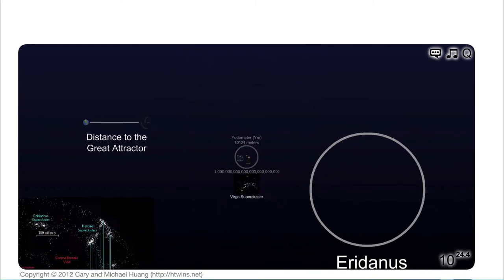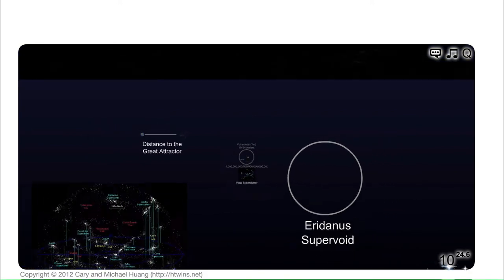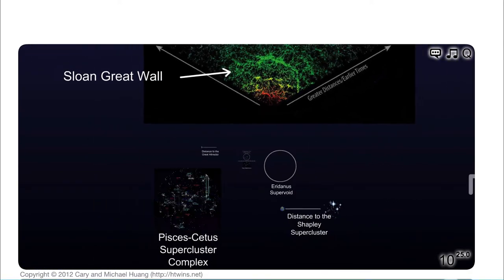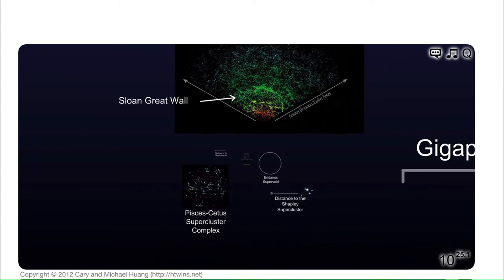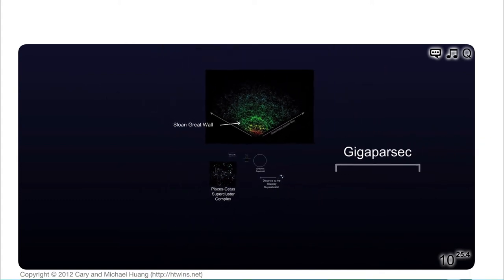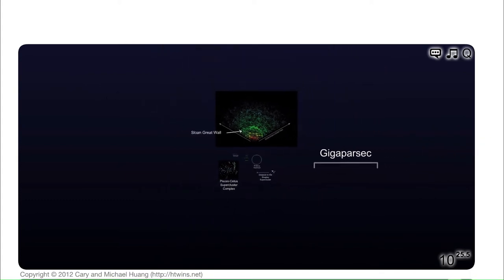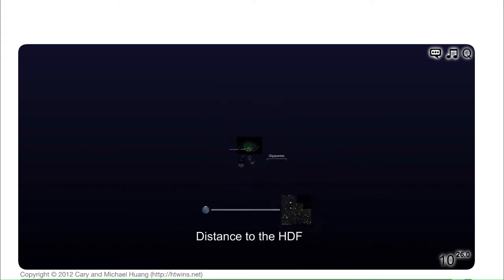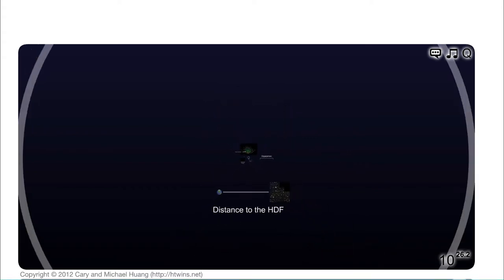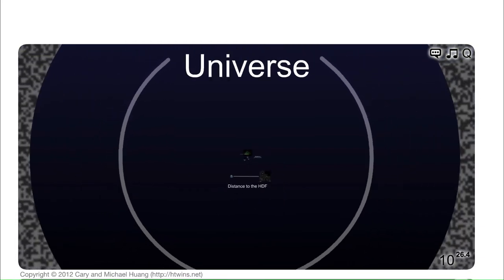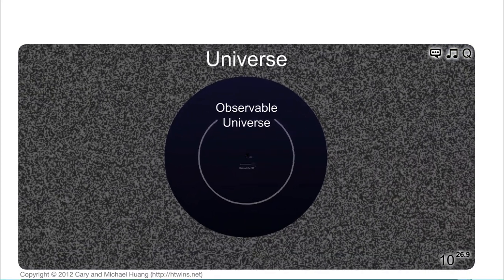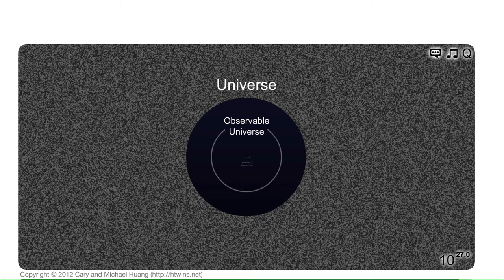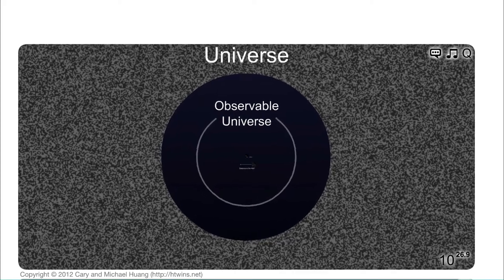We get out to the Virgo supercluster, great voids, we start seeing things like the voids and clusters that we see on very very large scales and we're talking about billions of parsecs, billions of light years as we get out to the edge of the universe here and we finally end up with what is the observable universe. So everything that we can see there, anything beyond that simply is invisible.